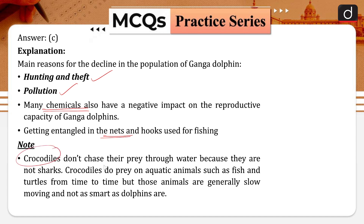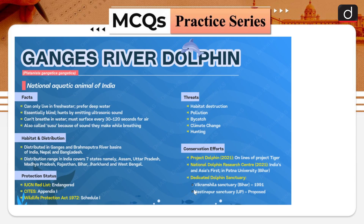Use of synthetic fertilizers and agricultural chemicals near rivers leads to pollution, which is also a threat to the Ganga river dolphin. So options one, three, and four — option C — are the right answers. Crocodiles do not chase their prey through water as they are large and heavy; they prey on slow-moving fish and turtles, not dolphins. The Ganga river dolphin is India's national aquatic animal, listed on Appendix I of CITES and Schedule I of the Wildlife Protection Act 1972. Conservation efforts include Project Dolphin, the National Dolphin Research Center in Patna, and sanctuaries like Vikramshila in Bhagalpur, Bihar.